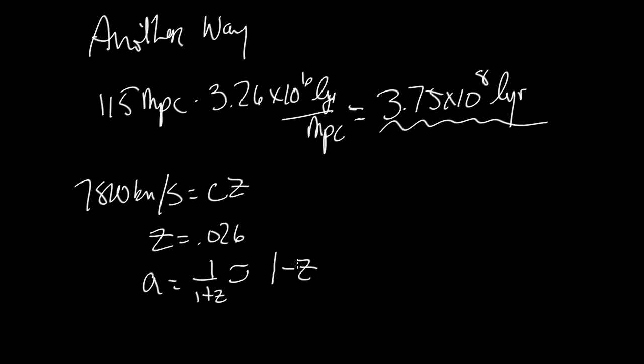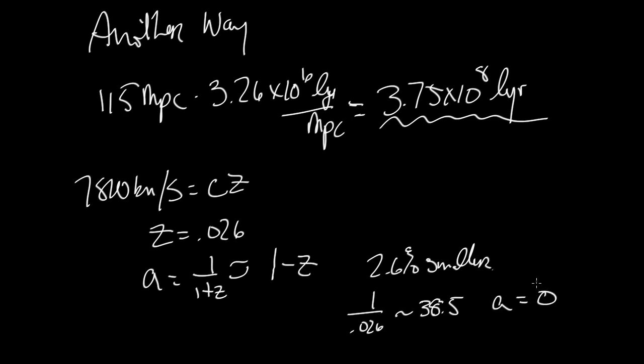Then we see that the scale factor was 2.6% smaller at the time the light was emitted from this galaxy. So 1 over 0.026 is 38.5. In other words, we have to go 38.5 times further back in time to when A is equal to 0, the time of the Big Bang.